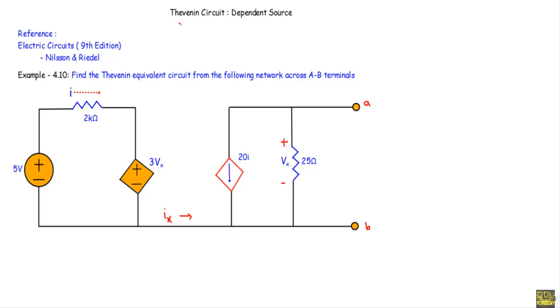In this video, I will show you another example of a Thevenin equivalent circuit with a dependent source. This is the reference for the given circuit: Electric Circuits, 9th edition, Nielsen and Riedel, Example 4.10.